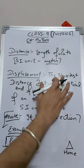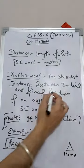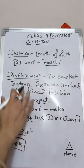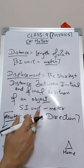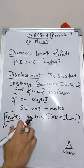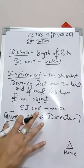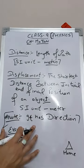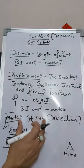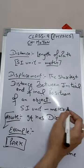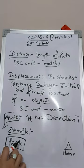Displacement is the shortest distance between the initial and final position of an object. The SI unit of displacement is also meter. One important thing to note is that displacement has direction, whereas distance is just a scalar value — a normal numeric value. Displacement involves a numeric value plus direction.